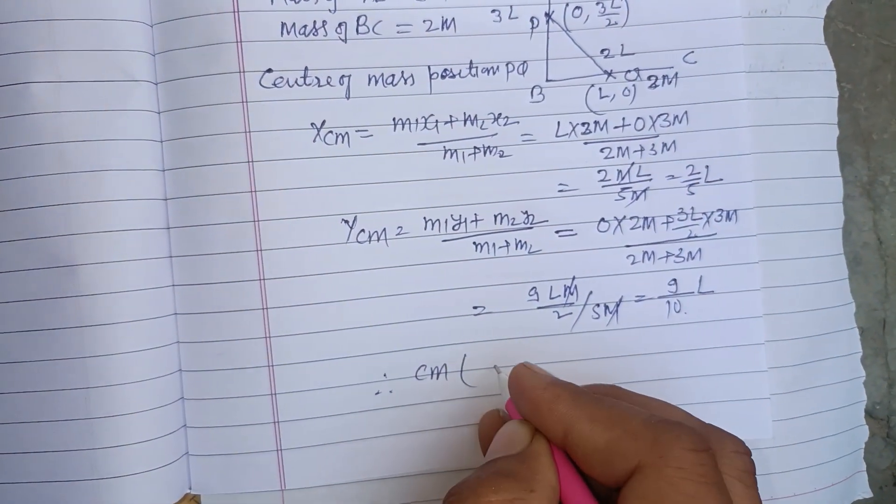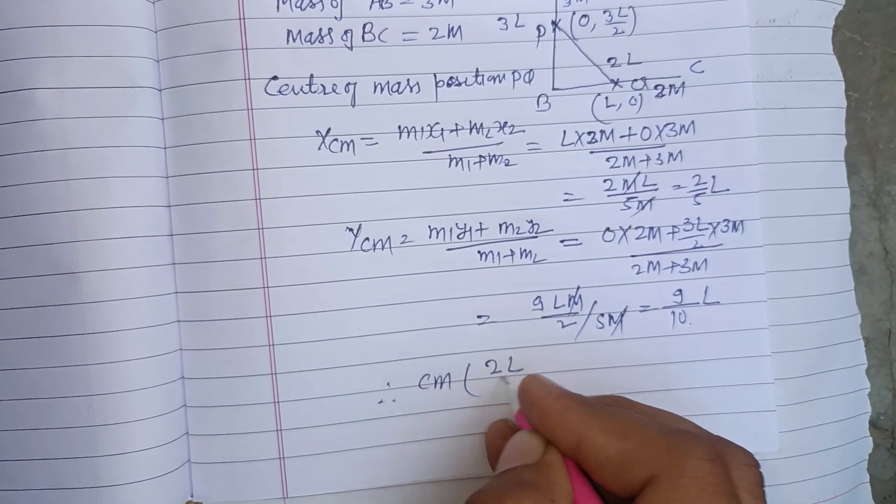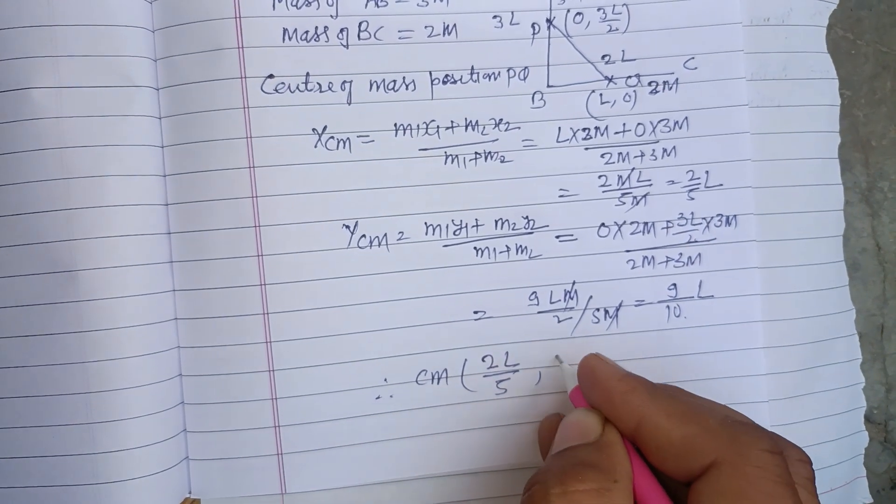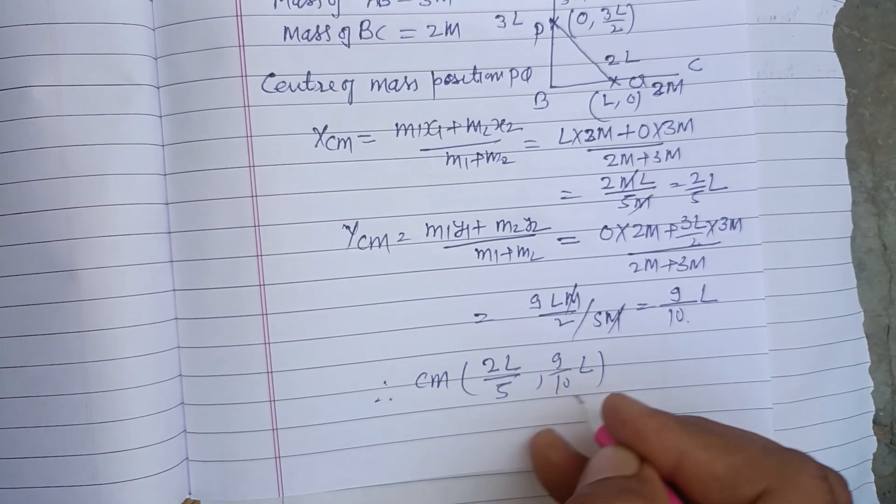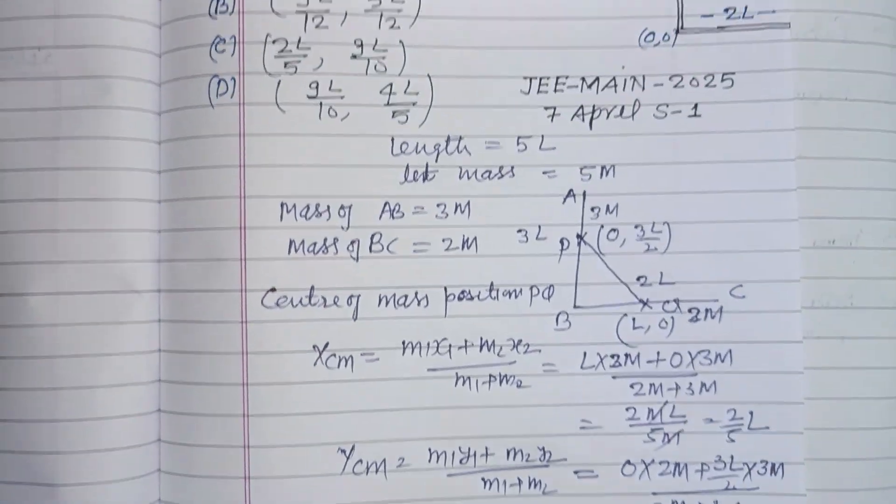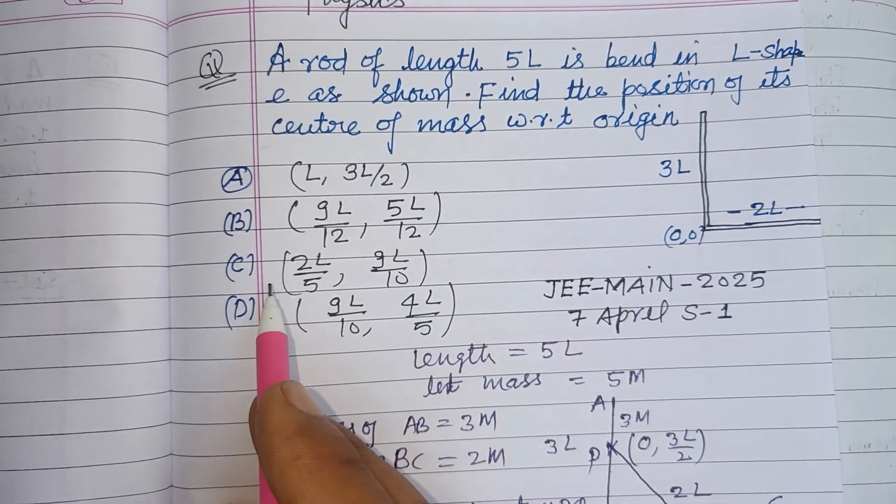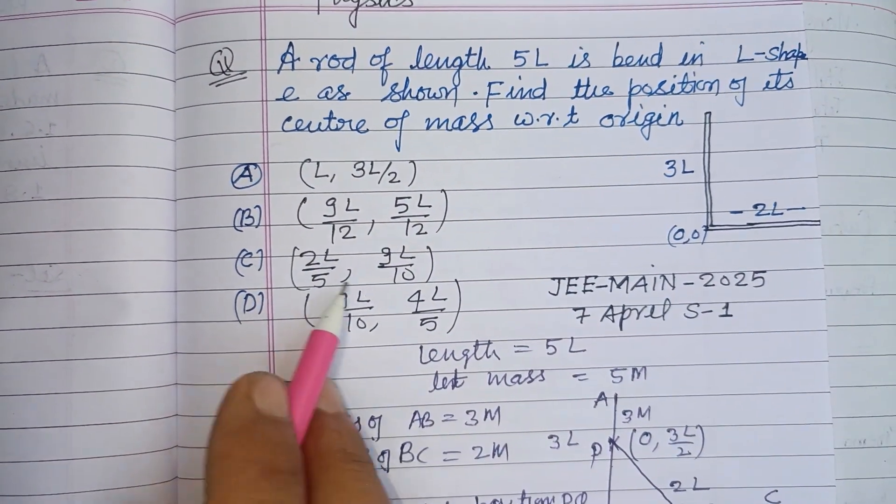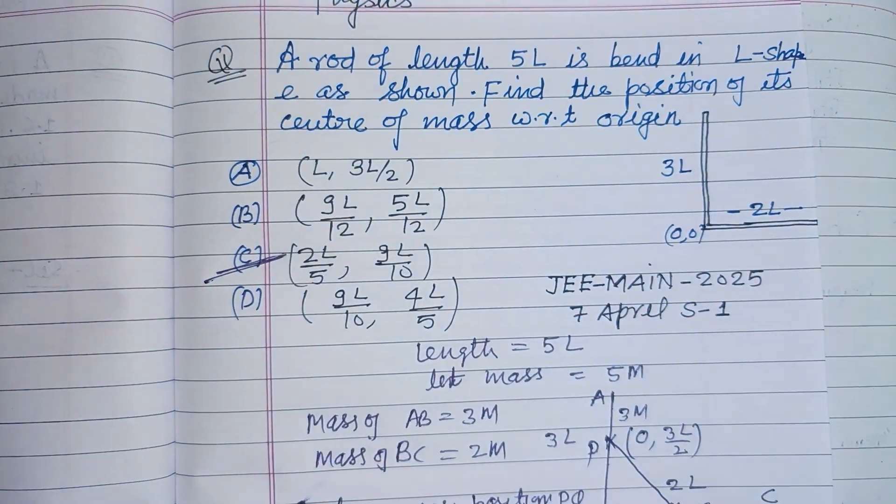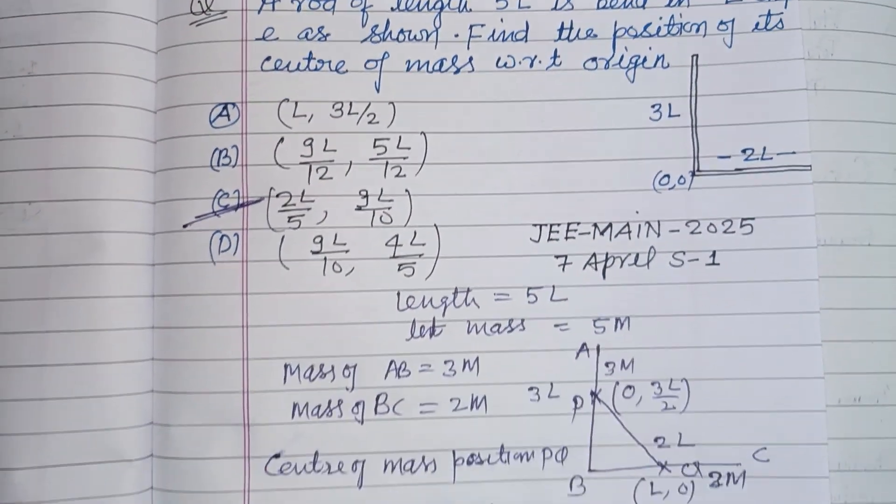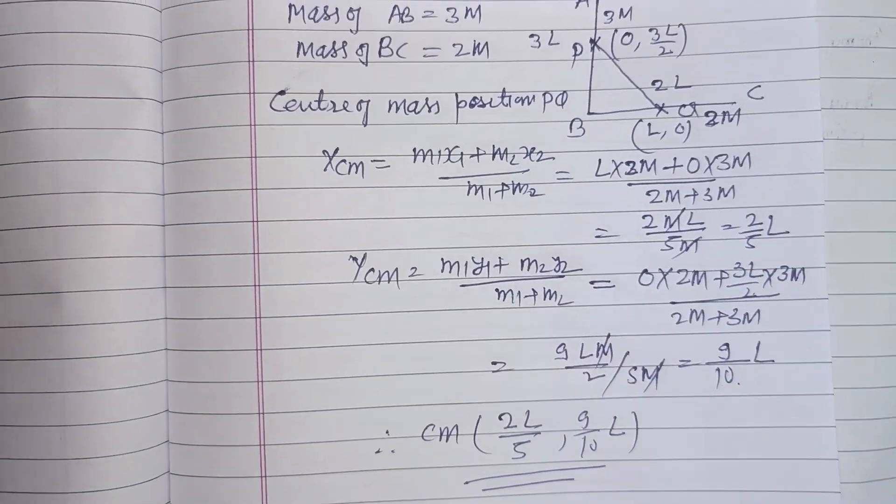Therefore, center of mass is 2L upon 5 comma 9 upon 10 times L. So this is the correct answer, 2L upon 5, 9L upon 10. C is the correct answer of this question. I hope you got it. Please like the video, subscribe the channel, thanks for watching.